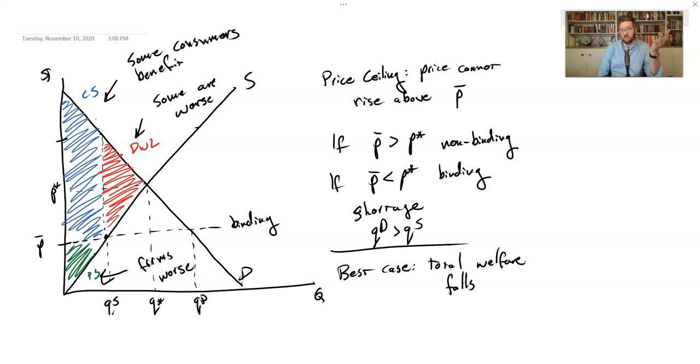It could be that the people who most want the good are somehow able to get it, but it could also be that it just becomes luck. If you have some kind of connection or corruption, it could be that there's a black market and some people get it because they have a connection and they sell it to others.